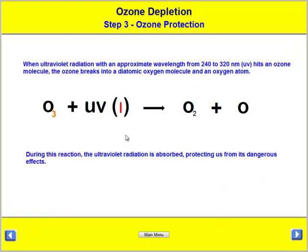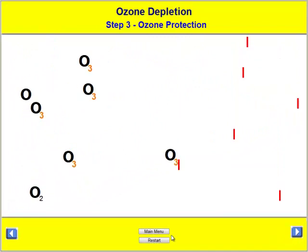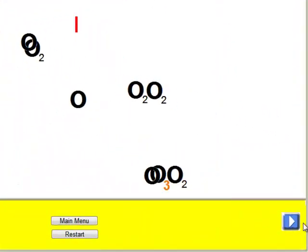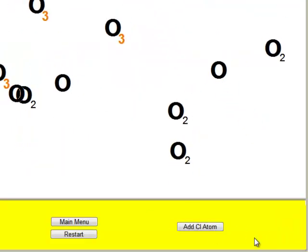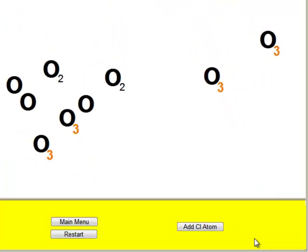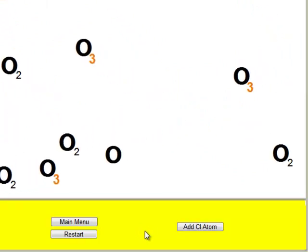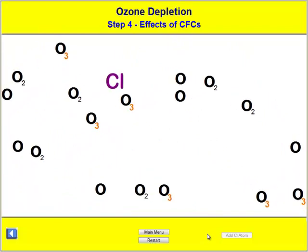Certain radiation will break the ozone back down — you can see the simulation illustrating this. It then goes through more details on exactly the reaction equations, which end up showing that everything is fine until we add a chlorine atom.